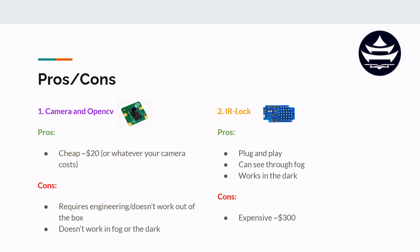The con of IR Lock is the cost — it's around $300 total, accounting for the $120 PixyCam, the $160 Mark I beacon, and the $20 LiPo battery needed to power the beacon. The other con is that the range of precision landing is limited, bounded at 0 to 60 feet.